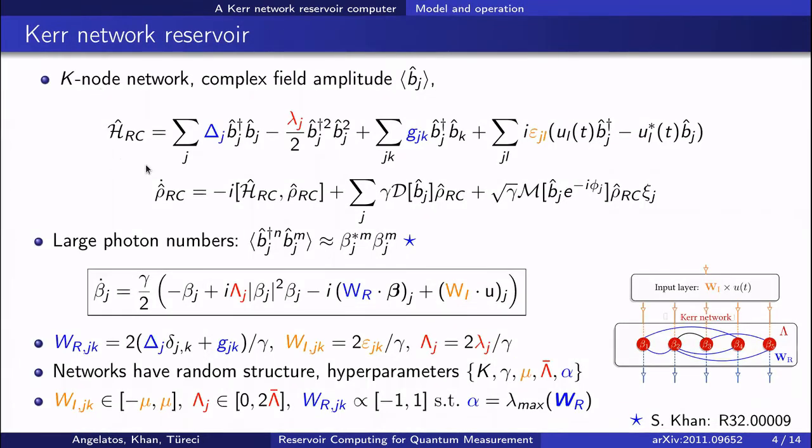Here is the Hamiltonian for the Kerr oscillator network that forms a reservoir computer, where each oscillator has a quartic nonlinearity and linear coupling to the input drive. The oscillators decay and are continuously measured, and the system can generally be described by a stochastic master equation.